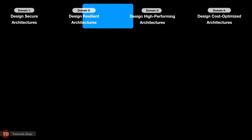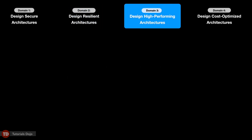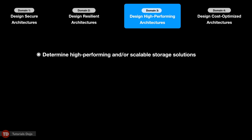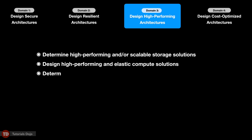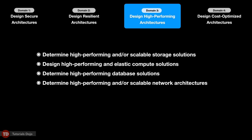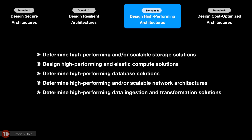The third domain is designing high-performing cloud architectures in AWS, with an exam coverage of 24%. It revolves around designing high-performing storage, computing, database, network, data ingestion, and transformation solutions. You should prepare for determining high-performing and scalable storage solutions, designing high-performing and elastic compute solutions, determining high-performing database solutions, determining high-performing and scalable network architectures, and determining high-performing data ingestion and transformation solutions.